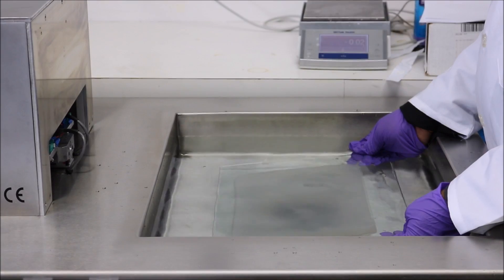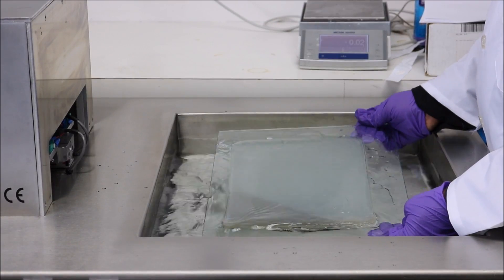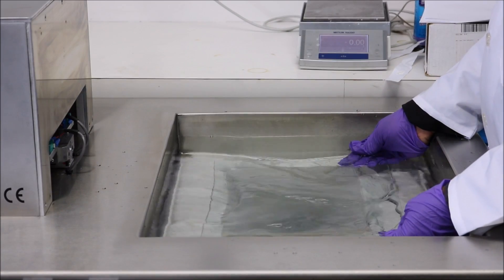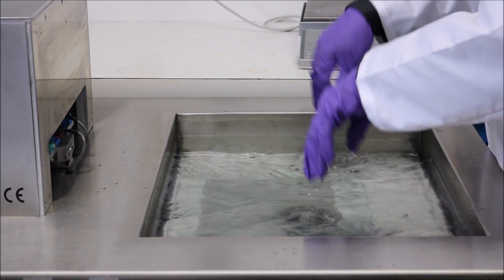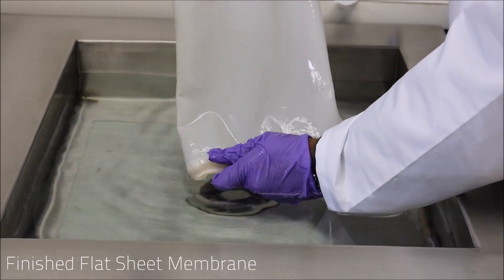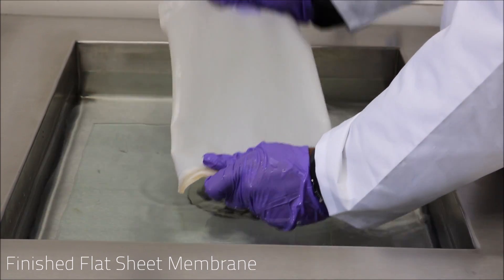Carefully submerge the plate into the coagulation tank to allow for solvent replacement and polymerization to occur. After allowing some time for the polymerization reaction, we now have our finished flat sheet membrane product.